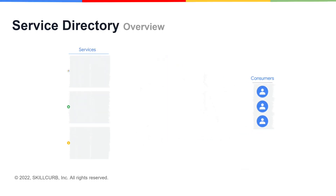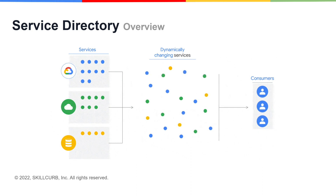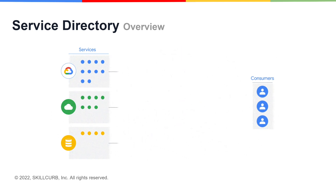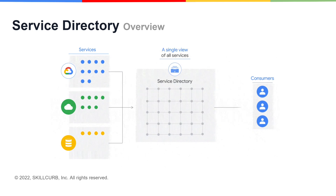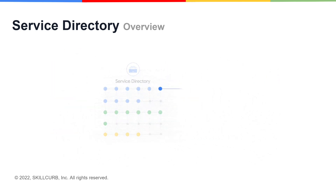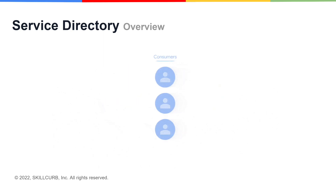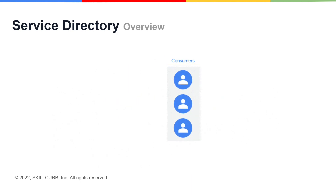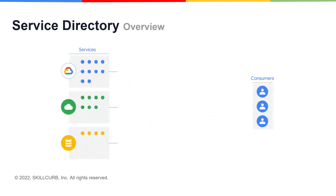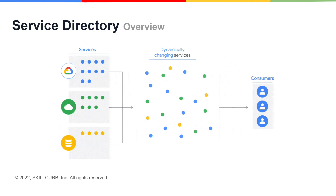Service Directory is a new managed solution to help you publish, discover, and connect services in a consistent and reliable way, regardless of the environment and platform in which they are deployed. It provides real-time information about all your services in a single place, allowing you to perform service inventory management at scale, whether you have a few service endpoints or thousands.